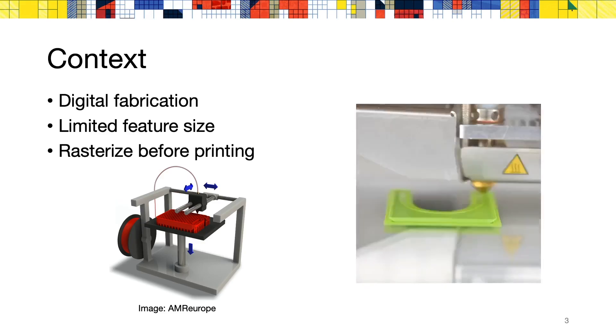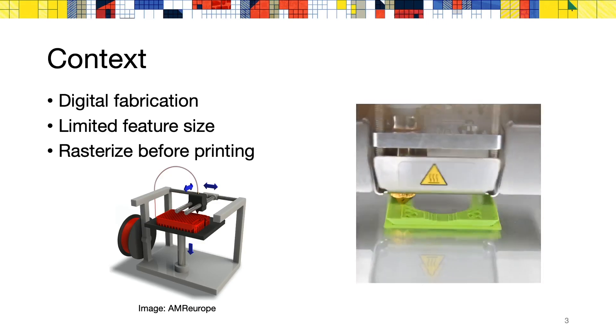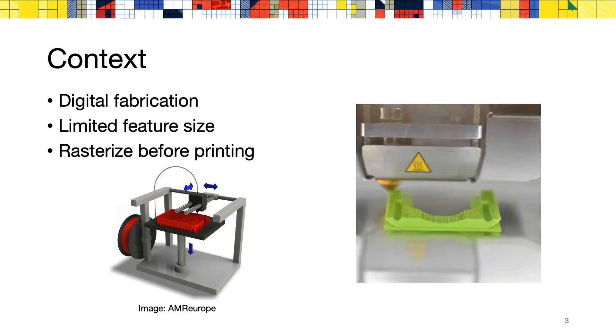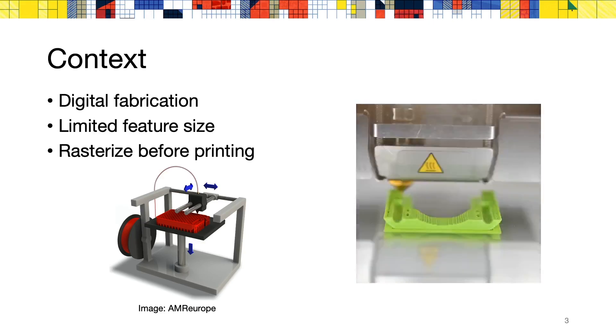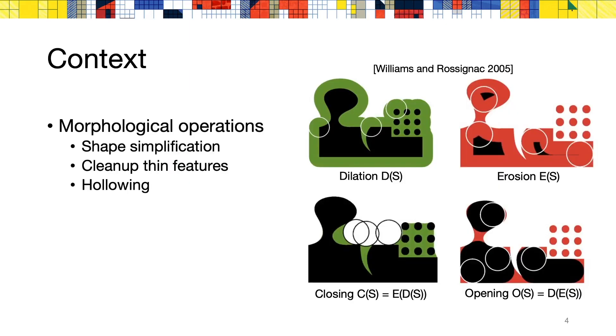Even with recent advances in the technologies, 3D printers often have a limited feature size to the object that they can print. In practice, models are often rasterized at the printer resolution prior to being sent to the machine. In this context, morphological operations can be used in order to simplify the input shape, clean up thin features, or hollow out a model prior to fabrication.